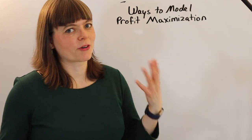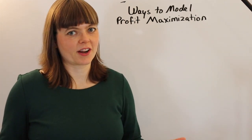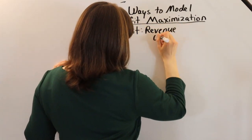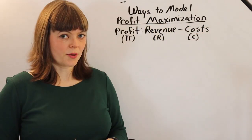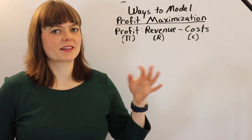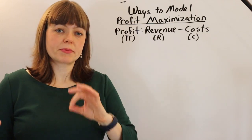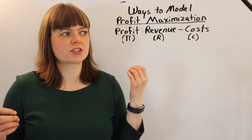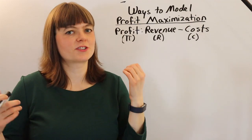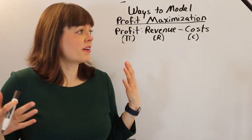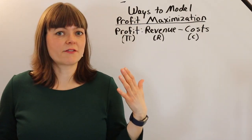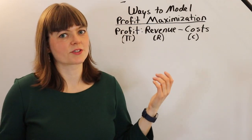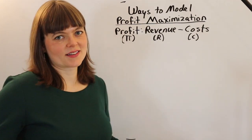Let's start off by defining profit: profit is just revenue minus costs. If you're going to build a model, you need some choice variable — what is the thing that the firm is choosing? Let's brainstorm types of choice variables we might want to build into a model.